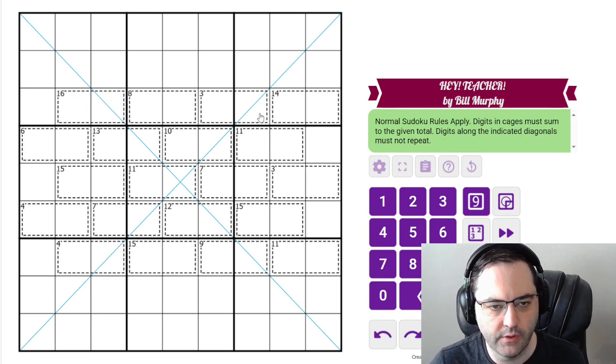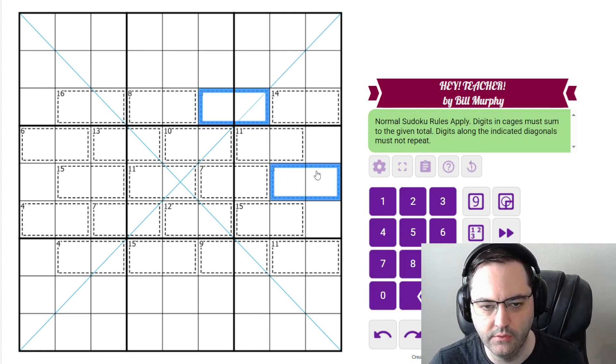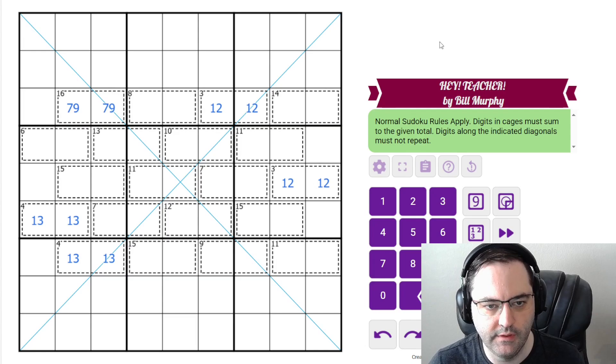Those are the rules, and we'll start with the cages that are the most restricted. We have a couple of 3s. The only way to do that is 1, 2. A couple of 4s here, 1, 3. Then a 15, which must be 7, 9.